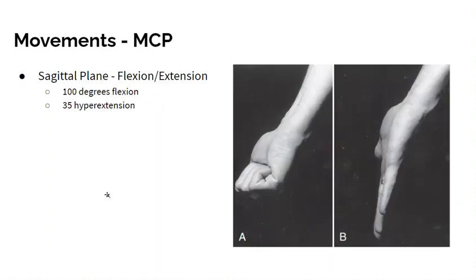At the metacarpophalangeal joint, your metacarpals are in your palm and your phalanges are your fingers. You can do flexion and extension about the medial-lateral axis.